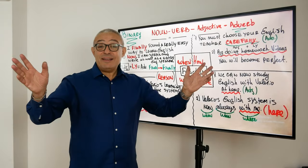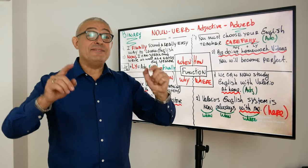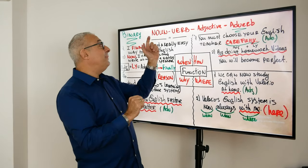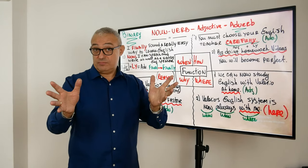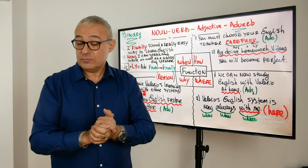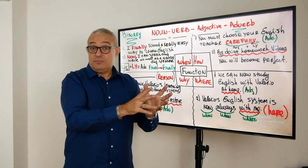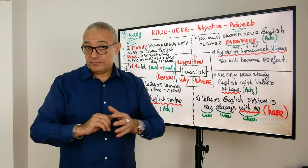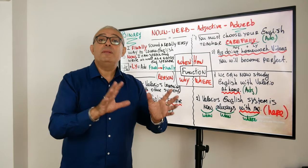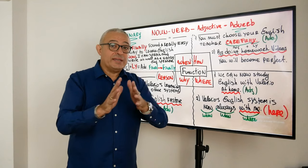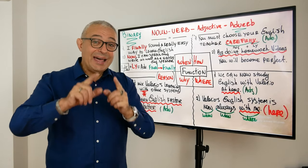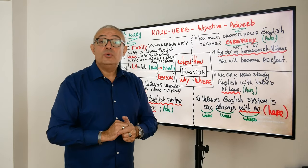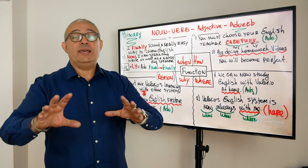So you will say: why, Valerio, do you think that adverbs give English a four-dimensional function? Well, first of all, when you talk about basic nouns and verbs — 'Valerio is a teacher' — we know Valerio, we know the function teacher, and we know the verb 'is.' That means it's a fact. That is your black and white English. You don't know what kind of teacher Valerio is. Not until you add an adjective to a noun do you have English in color.